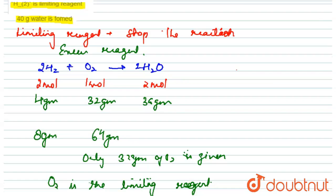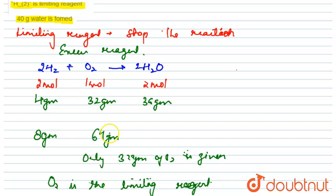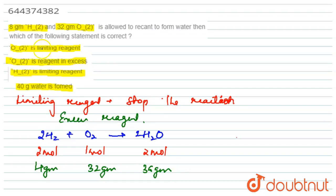To summarize: from the balanced equation, 4 grams of H₂ requires 32 grams of O₂. Since 8 grams of H₂ is given, it requires 64 grams of O₂, but only 32 grams of O₂ is available. Therefore O₂ is the limiting reagent and H₂ is the excess reagent. The correct answer is option 1: O₂ is the limiting reagent.